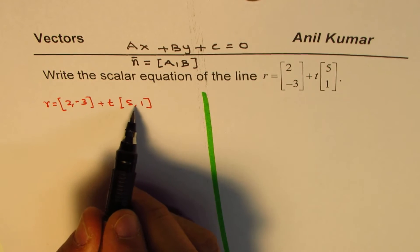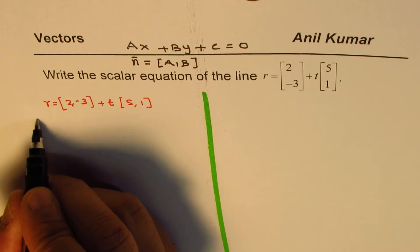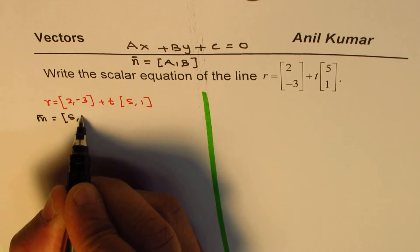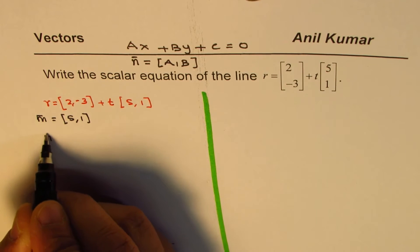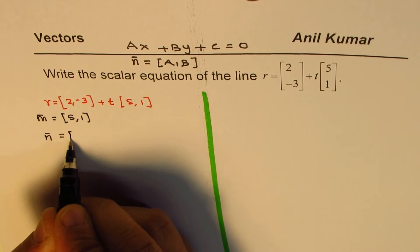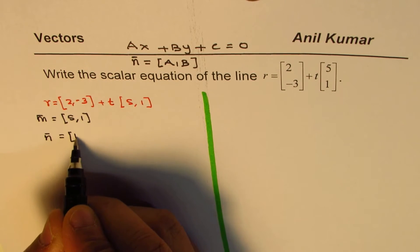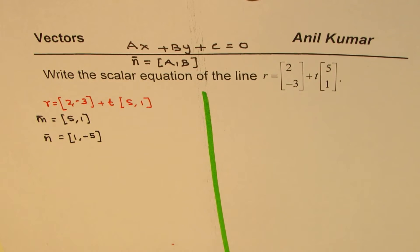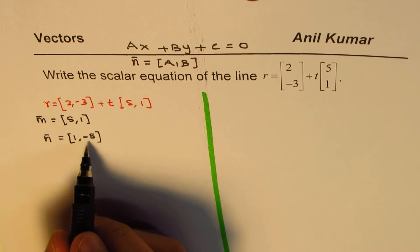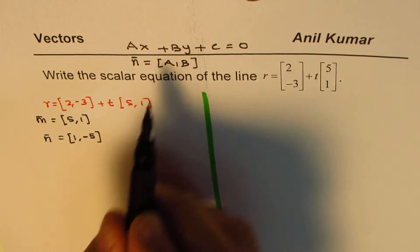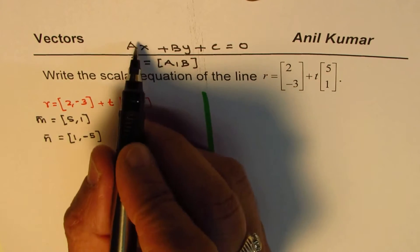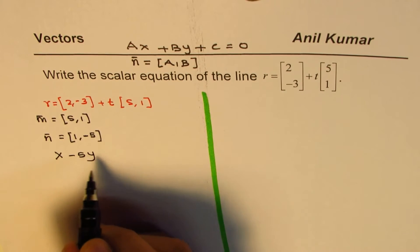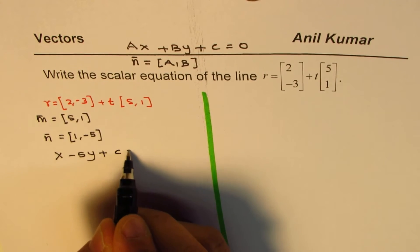Now, we are given here the direction vector, which is (5, 1). From the direction vector, we can always read the normal vector. We need to flip this to (1, -5) and change one of the signs. So that becomes the normal vector. Once we have the normal vector, these are a and b values in the equation of the line. So a is 1, we could write this as x minus 5 for b, so that is y plus c equals 0.